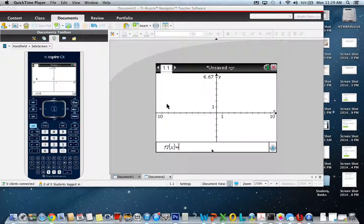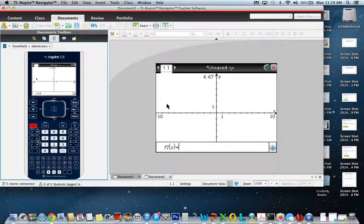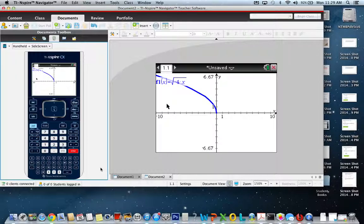And so if we had the graph for f of x, we're going to put in the square root of negative 4x, so the square root of negative 4x, and then I'm going to enter that.